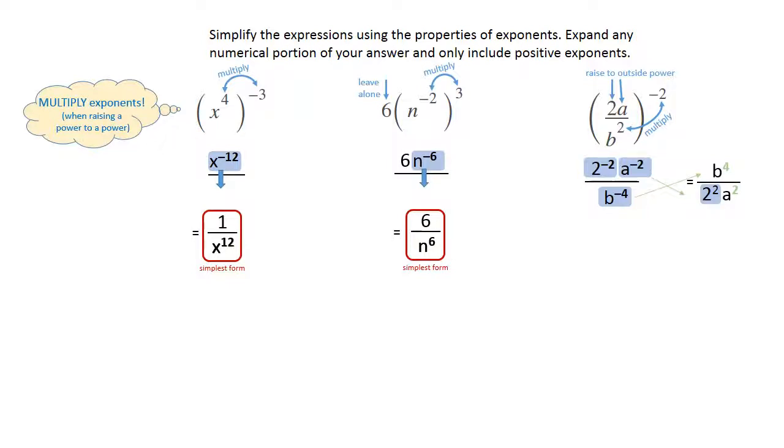The next thing to do is go ahead and evaluate the 2 squared. So we're going to have the b to the 4th on the top. 2 squared becomes 4, and the a squared is still hanging out on the bottom. And that concludes the simplification of that expression. So these are the ways that you'll be looking at multiplying exponents.